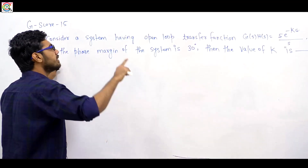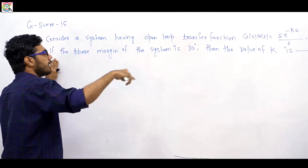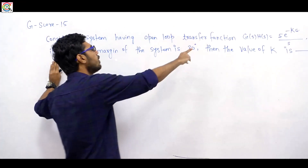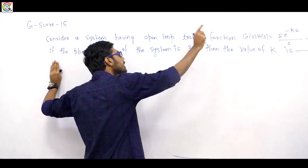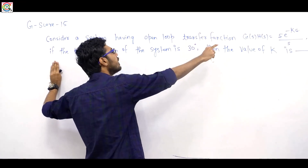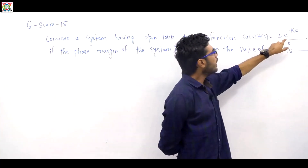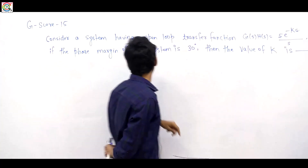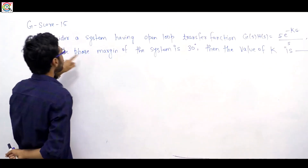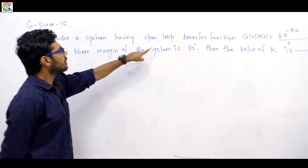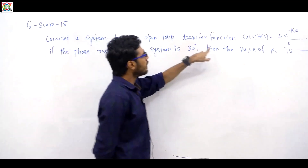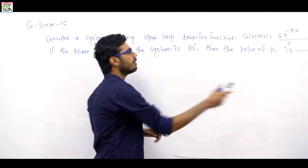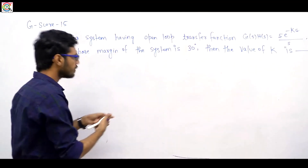The question states: if the phase margin term is 30 degrees, then what is the value of k?